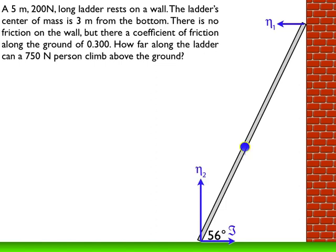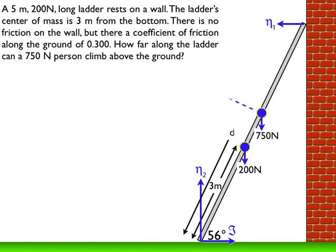The ladder itself, where its center of mass or center of gravity is located, that's 200 Newtons going down. And then the person is going to climb somewhere on the ladder. I don't know exactly how high they're going to climb — they'll just be somewhere up on the ladder itself.